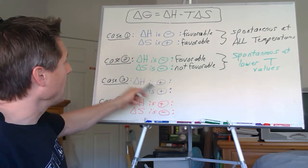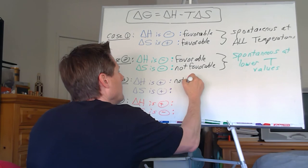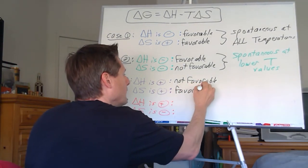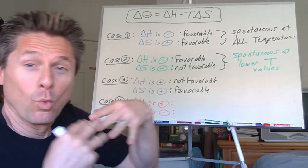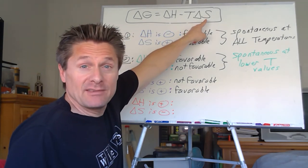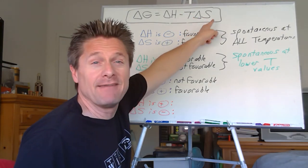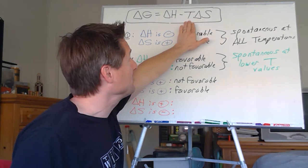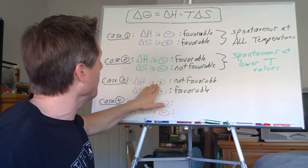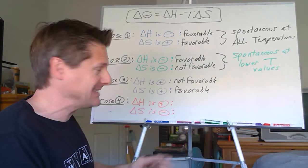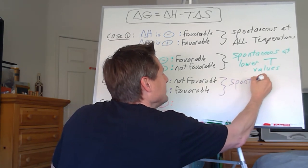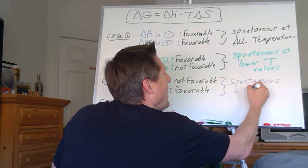Case three: delta H is positive (endothermic — not favorable), but delta S is positive (increasing entropy — favorable). Again they work against each other, but now it's flipped. Since delta S is positive, the T delta S term is always negative, and its magnitude grows with temperature. At higher temperatures, the negative T delta S term can overwhelm the positive delta H and make delta G negative. So this is spontaneous at higher temperatures.